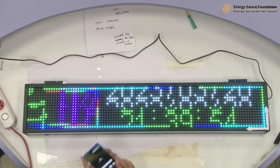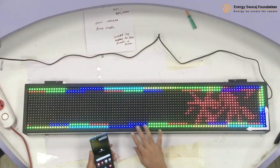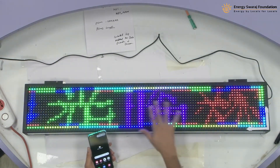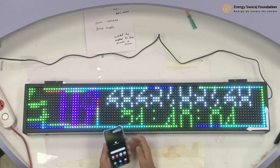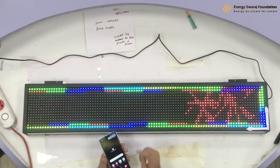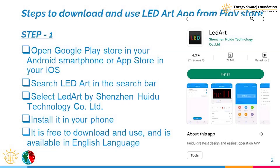I'll show you one by one how to install this app. Along with the app, we also need synchronization between the controller and the display — only then will we have exact control over it. On the Play Store, search for 'LED Art'. The icon shows L in red, E in yellow, and D in green. It requires about 74 MB of space, and this installation is only needed once.